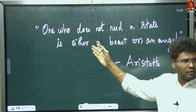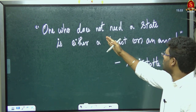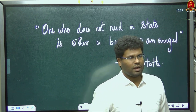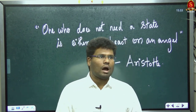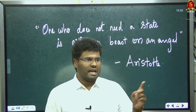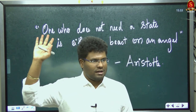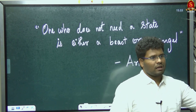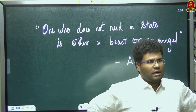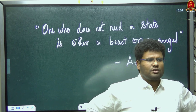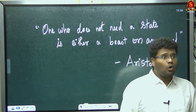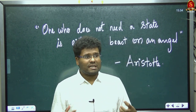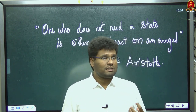Aristotle nicely puts it: 'One who does not need a state is either a beast or an angel.' If you are living outside the state and don't need its support, you must be either sub-human or a god — definitely not a human being. For example, if today there is no police and no law enforcement agencies in this country, how many crimes would increase and how people would behave — the animalistic nature in human beings would come out.